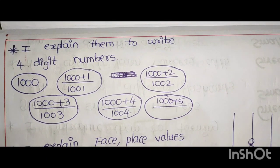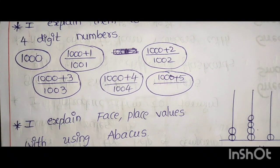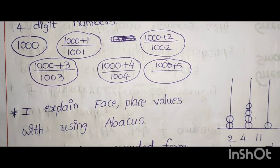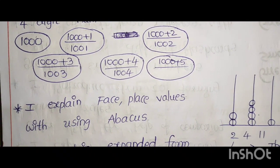And I explain them to write 4 digit numbers. 1000, 1000 plus 1, 1001, 1000 plus 2, 1002. I explain how to write the numbers with easily. I explain face, place values with using abacus.